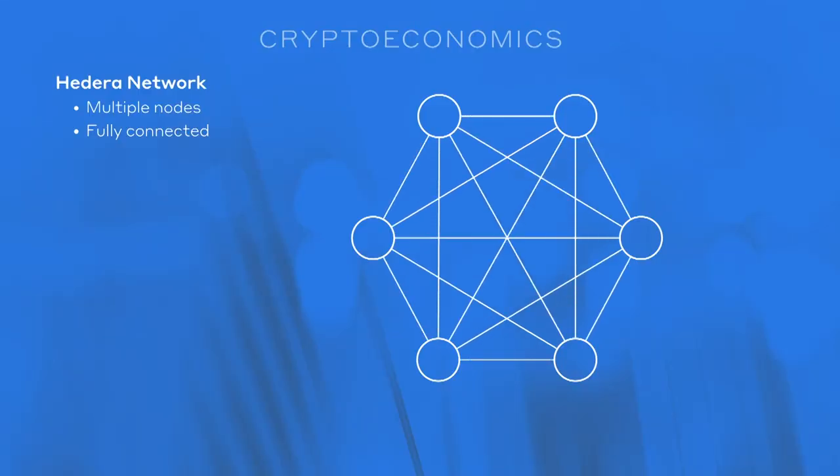This is the network — a bunch of computers. Each of those circles is a computer. The purpose of these is to come to consensus. If you store a file, they all store the file. If you're on a smart contract, they all run the smart contract. They come to consensus on what the results are and on what they're storing.